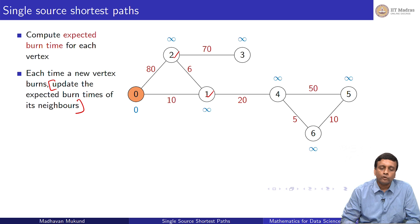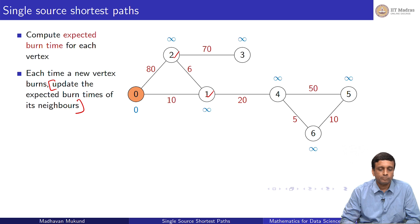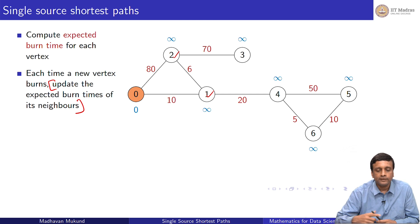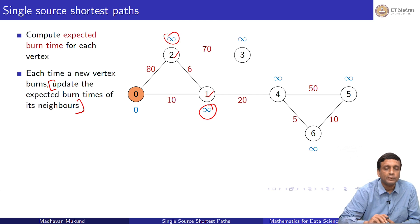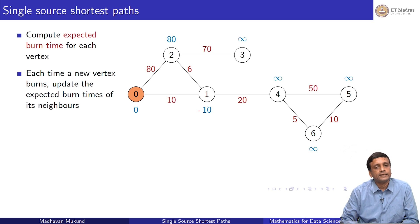Once we have burnt vertex 0 at time 0, we look at its neighbors — namely 2 and 1 — and update. As far as we know, 2 is never going to burn, but now we know it will burn at least by time 80. Similarly, vertex 1 will burn at least by time 10. So we update these two entries and reduce them to 80 and 10.